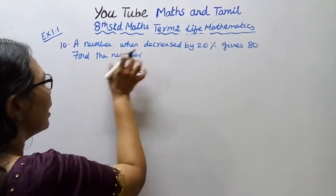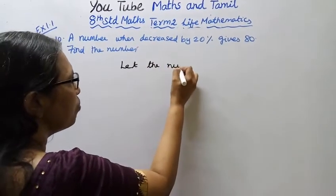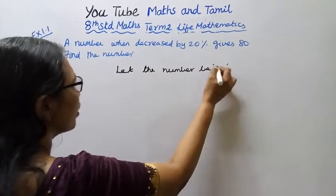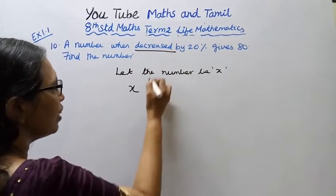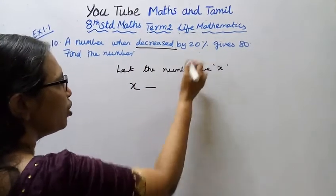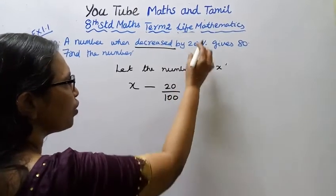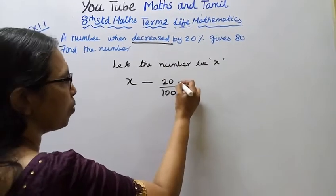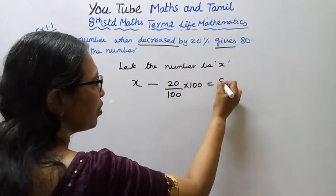Let the number be x. The number x decreased by 20%, which is 20 by 100, or 20% of that number, gives 80.